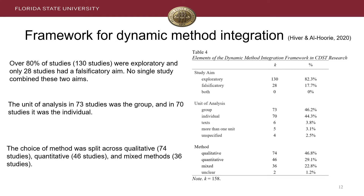With reference to the framework for method integration, we can see that over 80% of studies were exploratory, and only 28 studies had a hypothesis-testing objective, and no study combined these two aims. We coded these notions — whether a study was confirmatory or exploratory — from the research objectives formulated by the studies, and not by examining claims made by the authors. The unit of analysis in 73 studies was the group, and in 70 studies it was the individual. There were five studies that included more than one unit of analysis — a small subset, but they illustrate how relying exclusively on group-level data may impoverish the field's understanding of various phenomena.